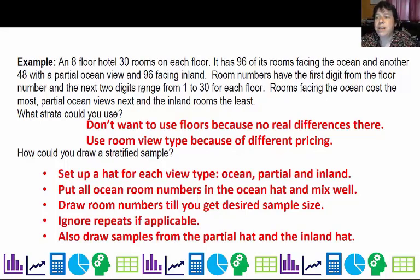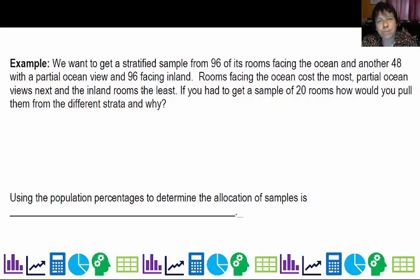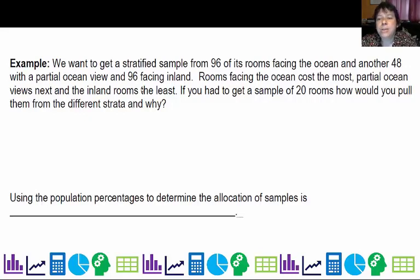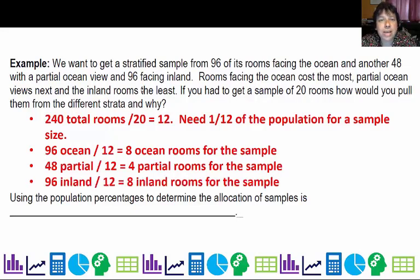If I wanted 20 rooms for my sample, I wouldn't just divide evenly by three, because I don't have an equal number of rooms of each type — there are different proportions. One approach is to look at the percentage of the population I want to sample. With 240 total rooms and wanting 20, I need roughly 1/12th of each group: 1/12th of the 96 ocean-view rooms gives 8 rooms, 1/12th of the 48 partial-view rooms gives 4, and 1/12th of the 36 inland rooms gives 3 — for a total of about 8 rooms sampled there. This strategy is called proportional allocation.